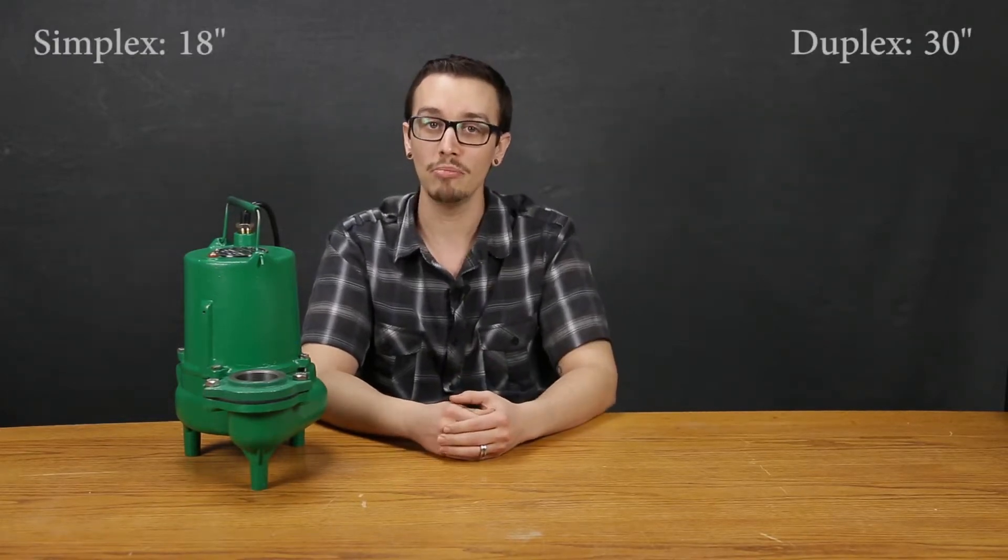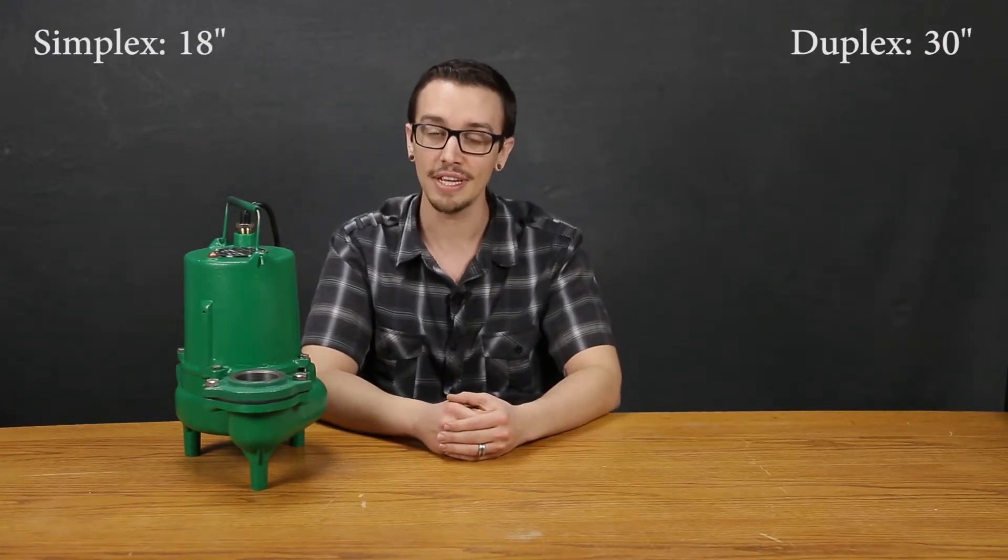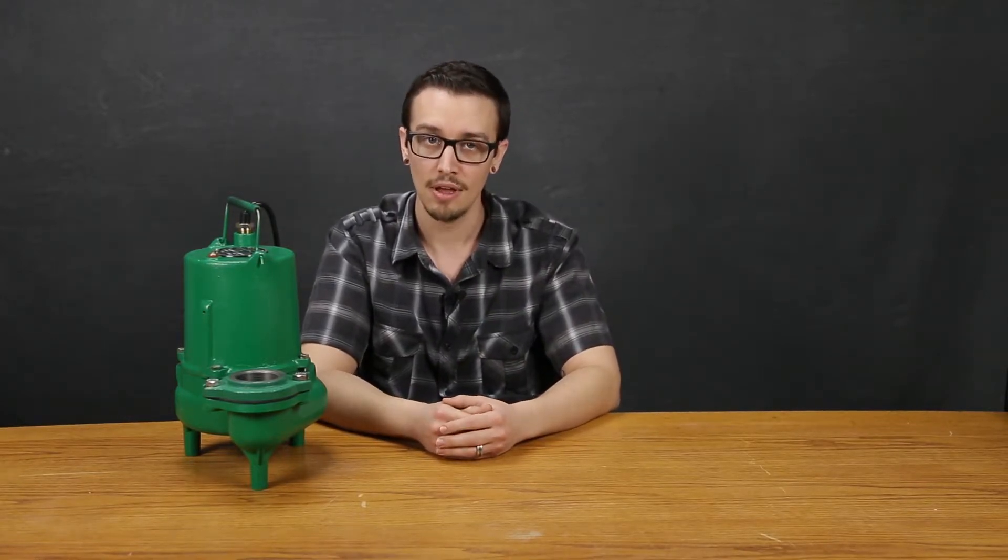The minimal sump diameter for these pumps in a simplex configuration is 18 inches and 30 inches for a duplex configuration. By maintaining this minimal diameter, we're ensuring that the equipment has enough room for proper operation and to help eliminate cord entanglement.